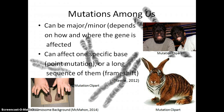Mutations among us can be major or minor, depending on how and where the gene is affected. They can affect one specific base, which is known as a point mutation, or affect a long sequence by addition or deletion, which then affects the rest of the DNA base pair sequence, as they are combined in sets of three. Whenever one is affected, the rest of the sequence is affected as well.